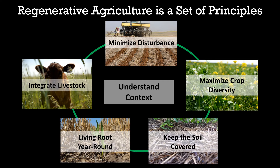Regenerative ag can be described a lot of different ways. While there are a lot of definitions — and I'll share General Mills' definition at the end of the video — one thing that most agree on is that regenerative ag is a set of principles. These are principles that can be applied by any farmer anywhere to regenerate their agricultural ecosystem, leading to benefits like improved soil health, enhanced nutrient cycling, carbon sequestration, and resilience to extreme weather.